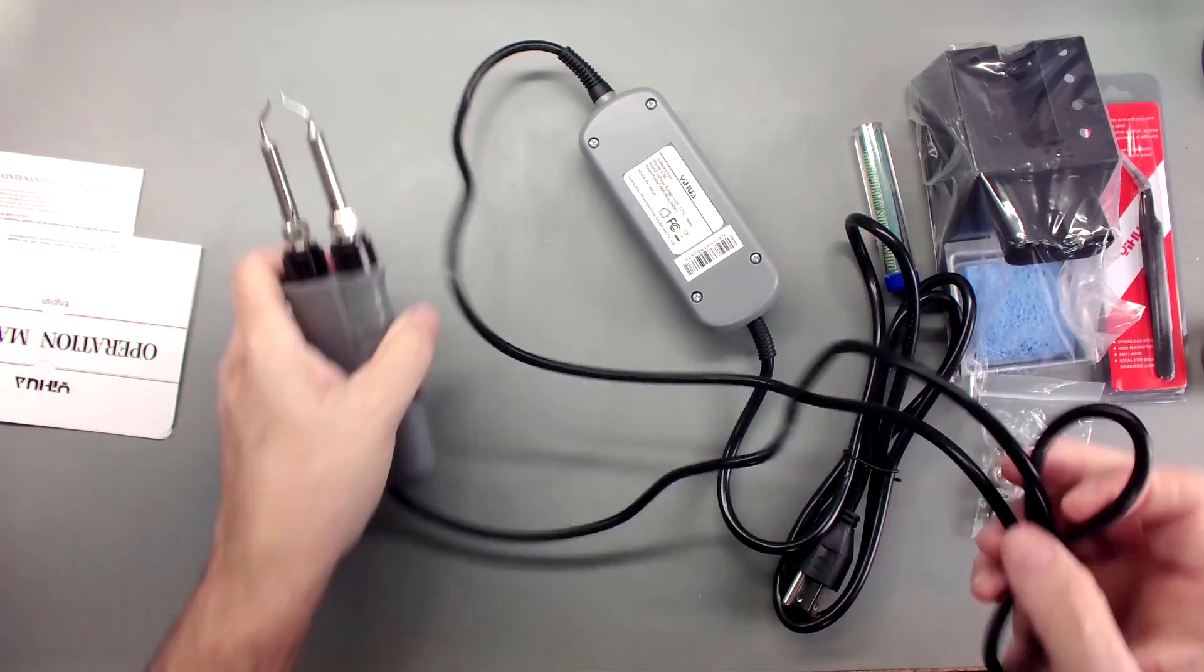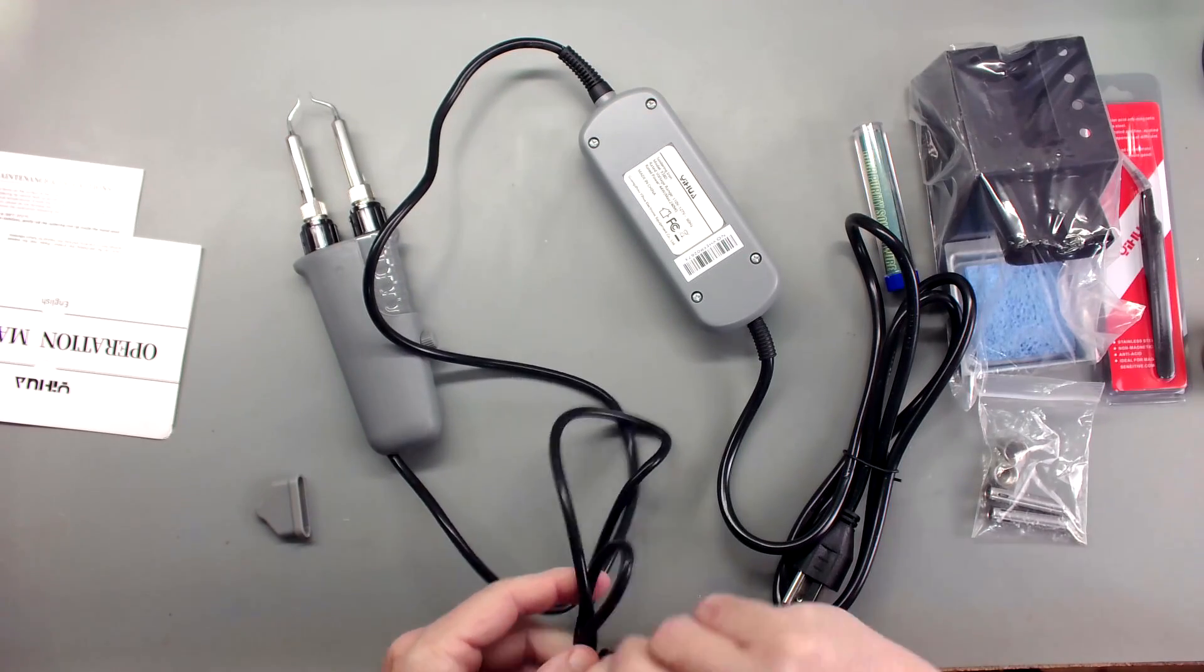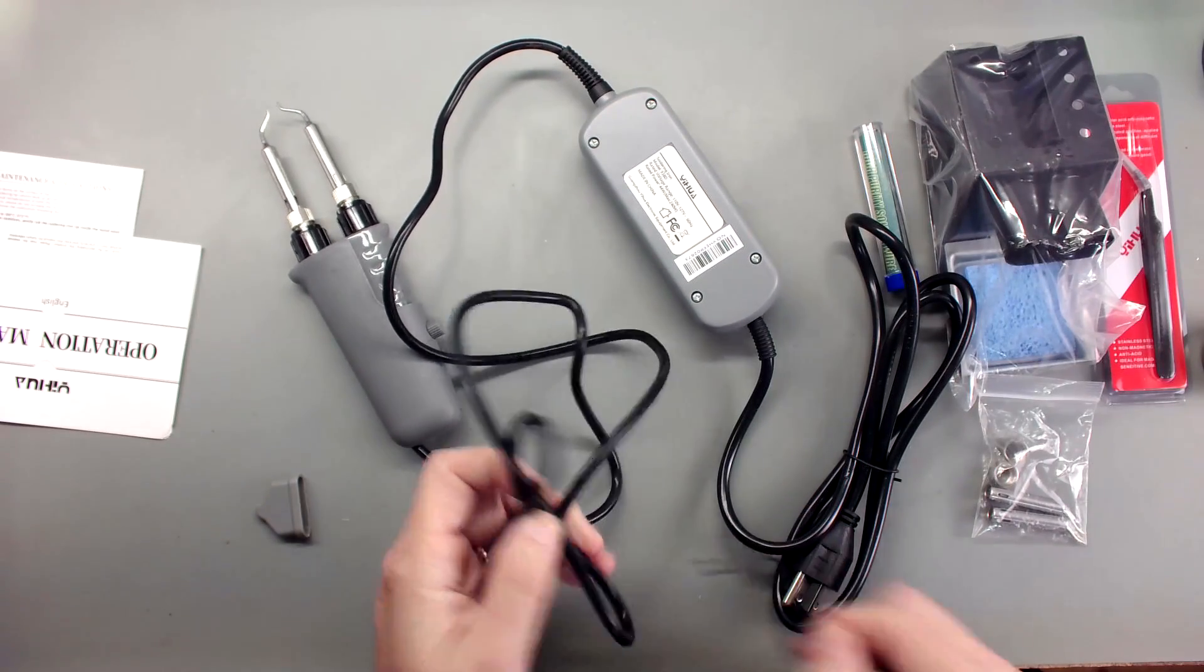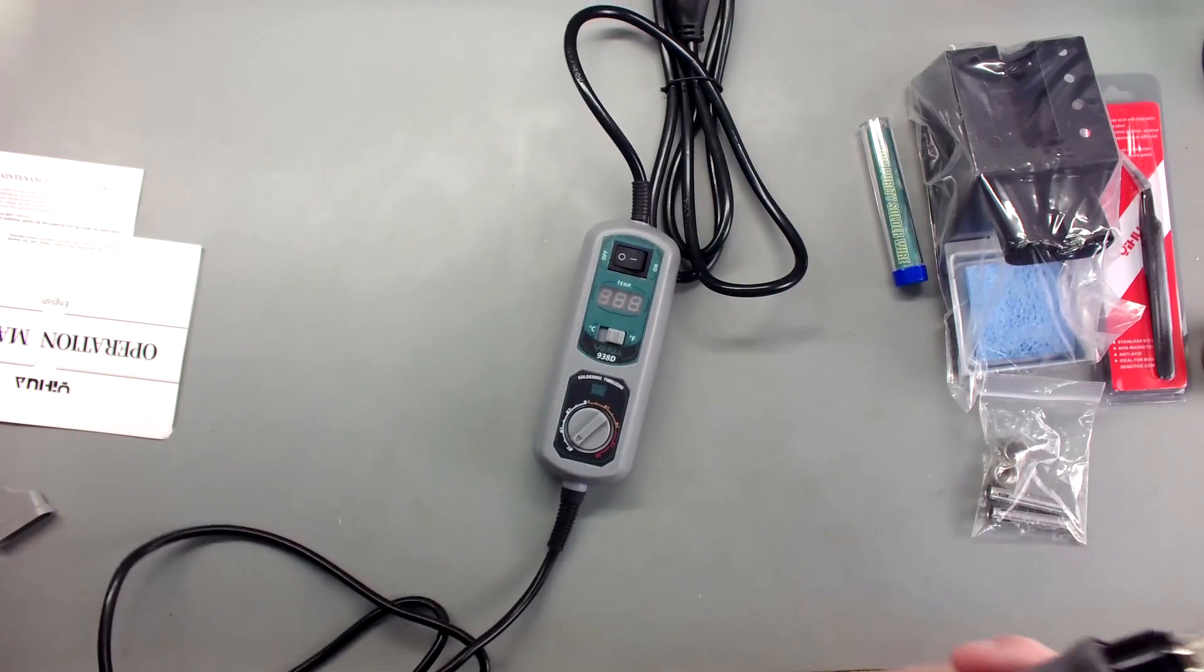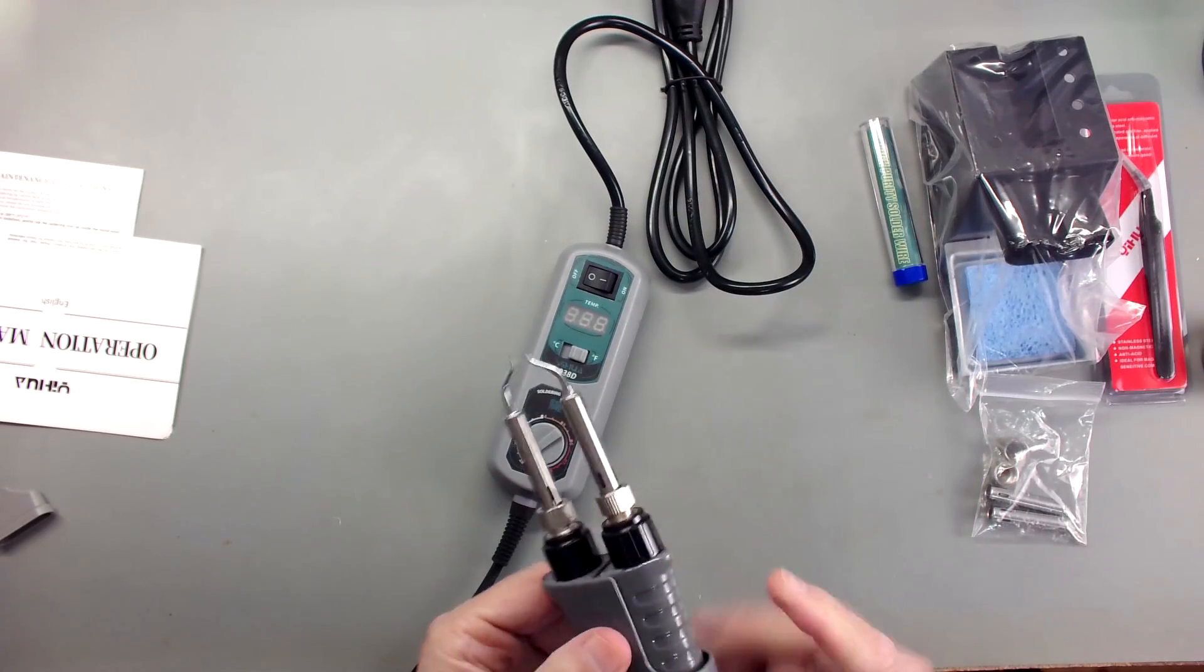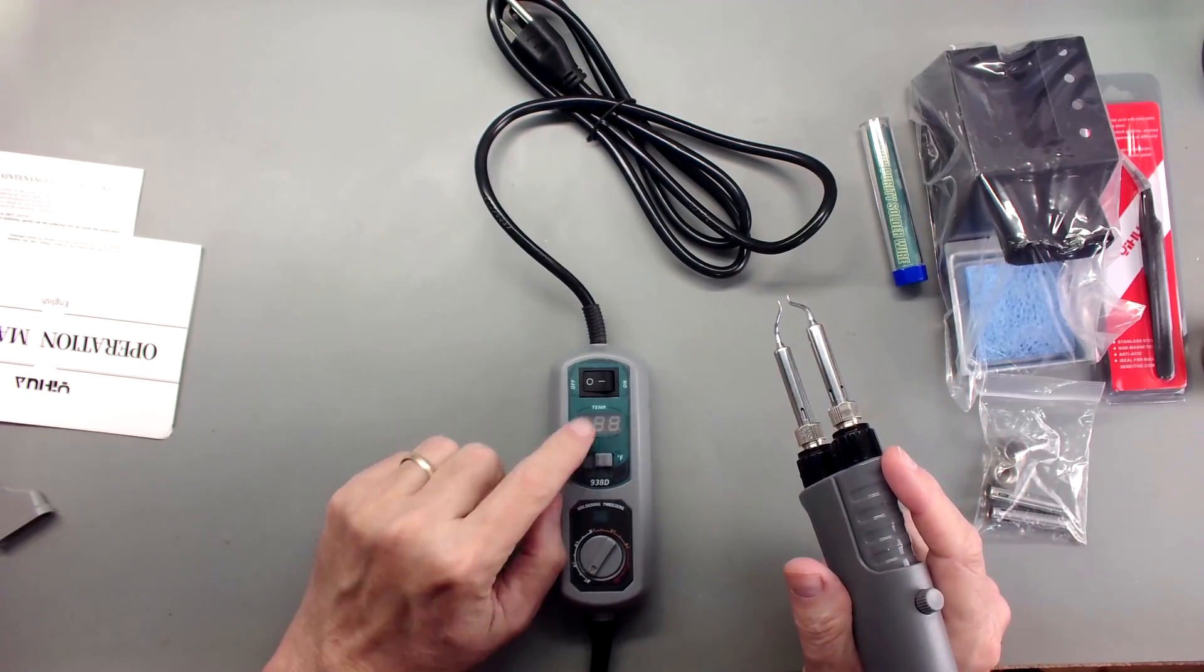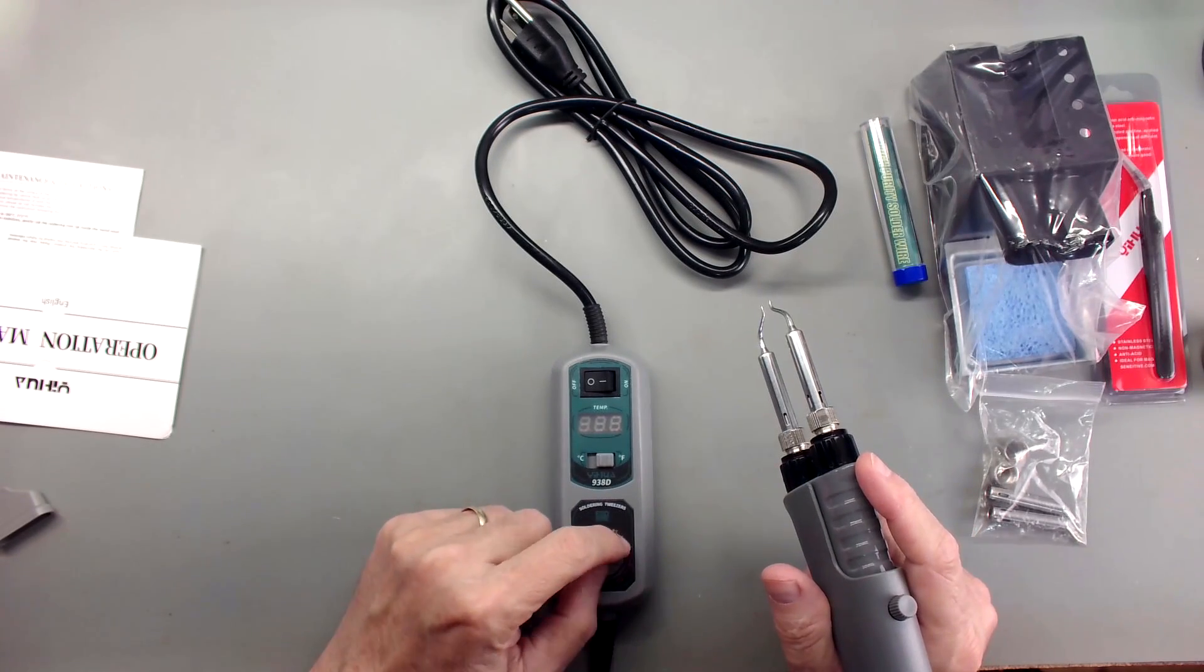Looks like we got a pretty good length of cord from the control box. They consider this portable. That's nice for me because the bench is getting full of soldering stuff, and that means when I don't need these I can put them away. I wouldn't have to have it out on the bench all the time. So we've got a control box here. On off, temperature, whether it's Fahrenheit or Celsius, and here's a thermostat.